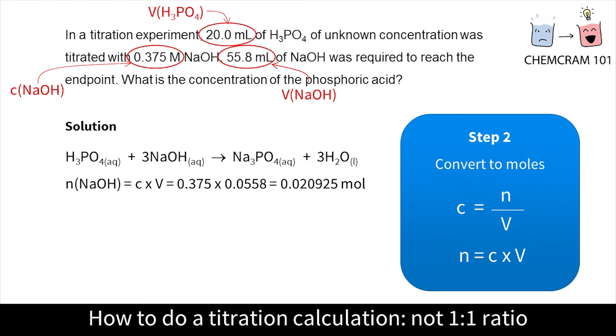The second step is to convert what you can to moles. The equation is C equals N over V which we can rearrange into N equals CV. We know C and V for NaOH so we can calculate the moles of NaOH.